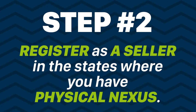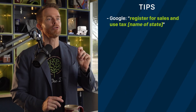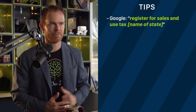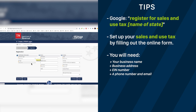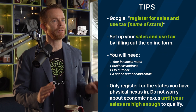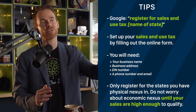Step two: register as a seller in the states where you have physical nexus. Here are a few tips. Google 'register for sales and use tax' and then put in the name of the state. Set up your sales and use tax by filling out the online form. You will need your business name, business address, EIN number, a phone number, and email. Only register for the states you have physical nexus in. Do not worry about economic nexus until your sales are high enough to qualify.